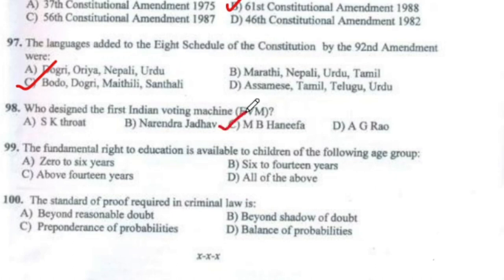Question 99: The fundamental right to education is available to children of the following group — 6 to 14 years of age.